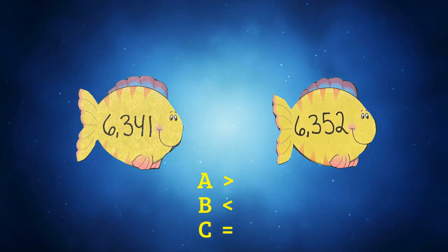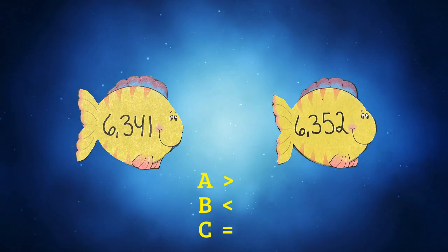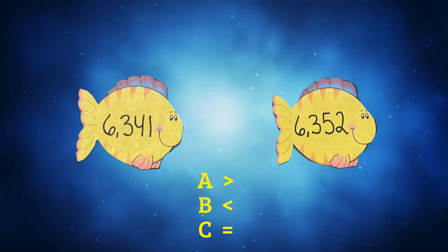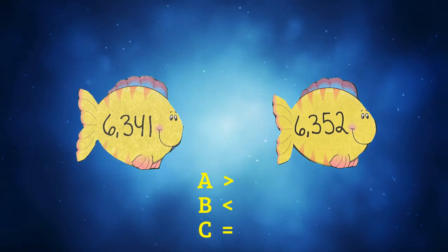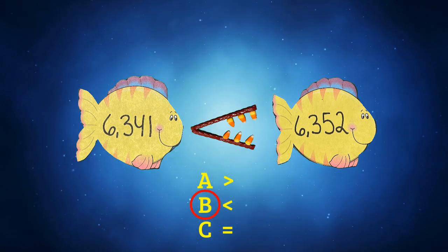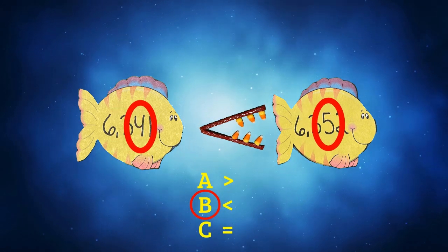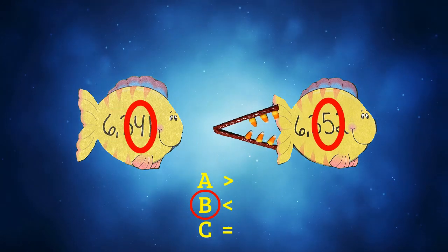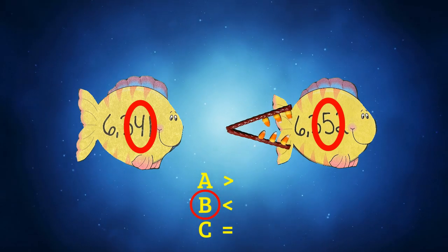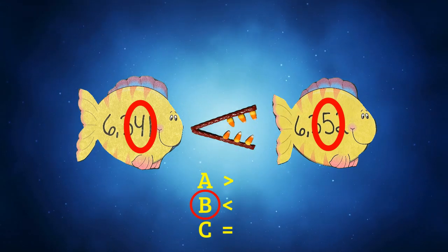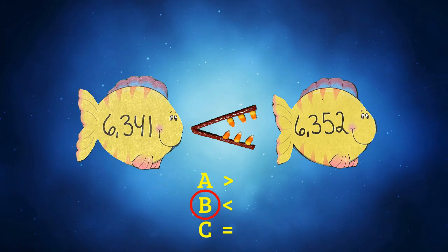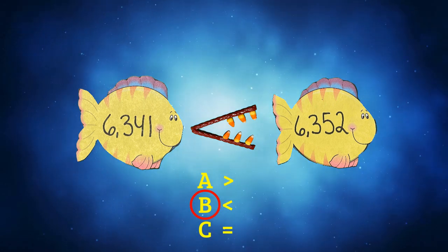Is 6,341 greater than or less than 6,352? Pause the video and write down your answer. If you said that the answer was B, then you're correct. Both numbers have a six in the thousands place and a three in the hundreds place. When we compare the numbers in the tens place, we notice that the five is the greatest number. So our sign is going to eat 6,352. So our final answer is 6,341 is less than 6,352.